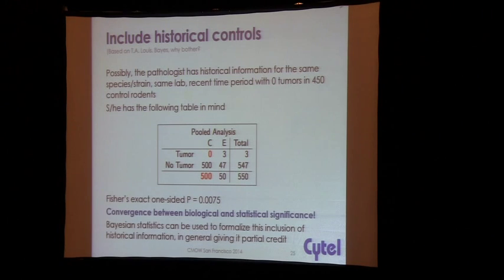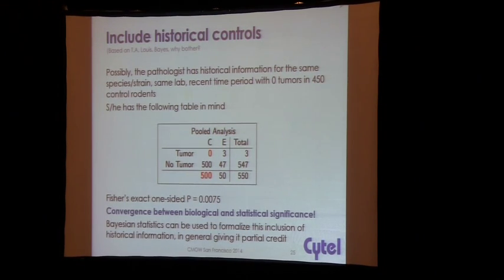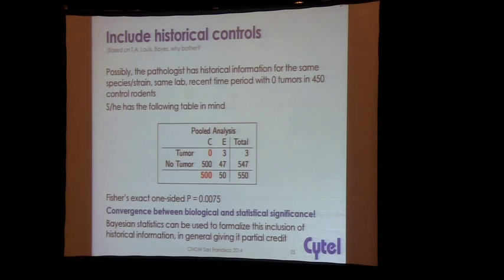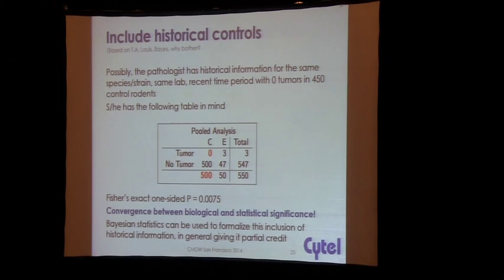What's happened here is you've incorporated information external to the trial — historical information. That could come from another trial, prior experience, or publications. Maybe five separate trials of 100 rats each — all that gets pulled together and informs the current experiment. At its core, that's a little bit what Bayesian thinking is doing within a Bayesian framework of statistics.